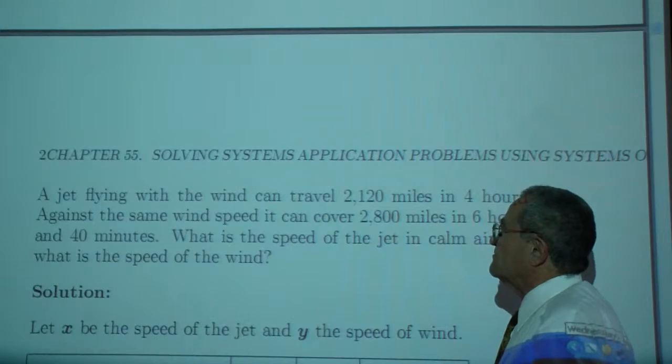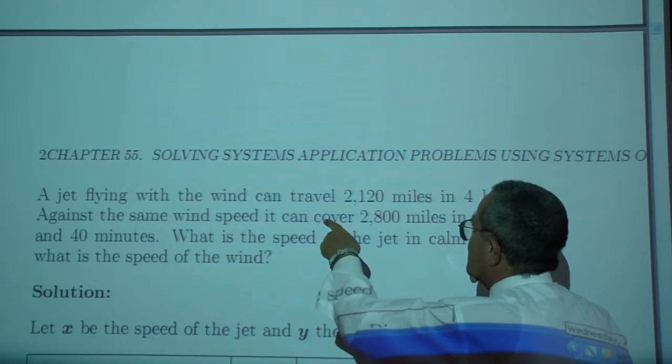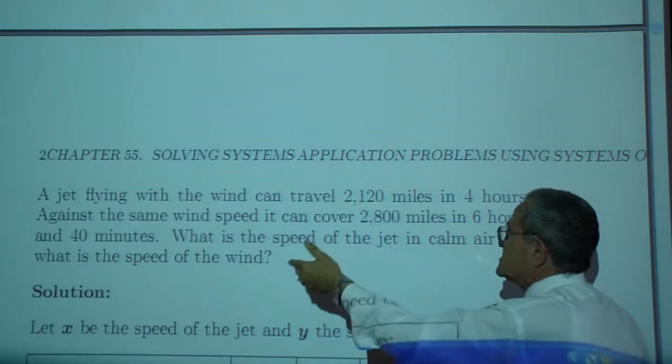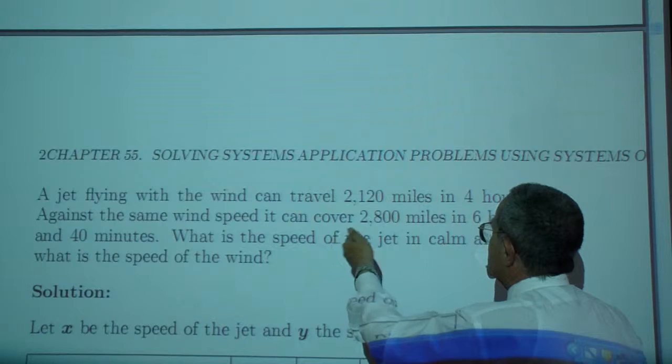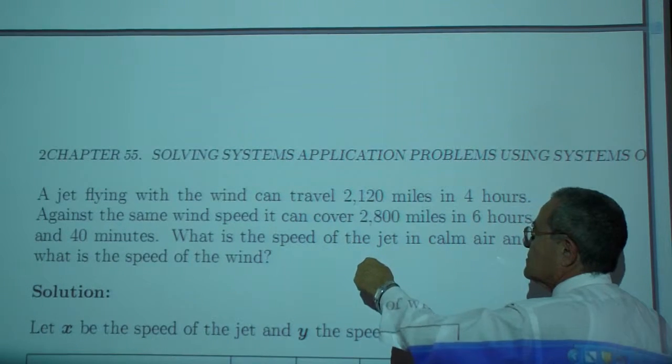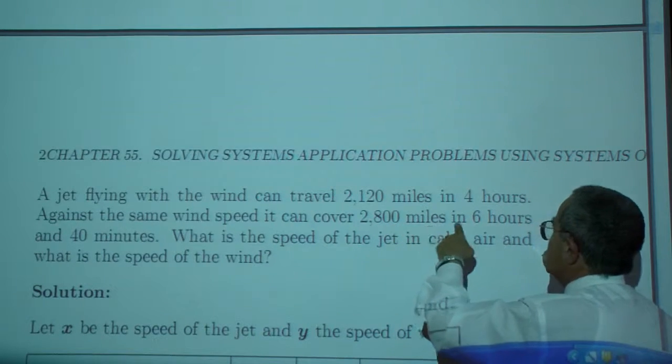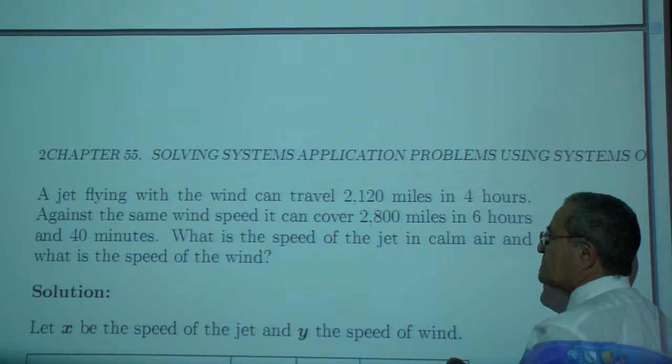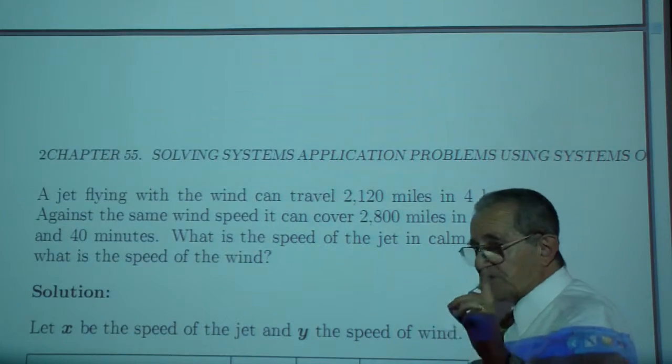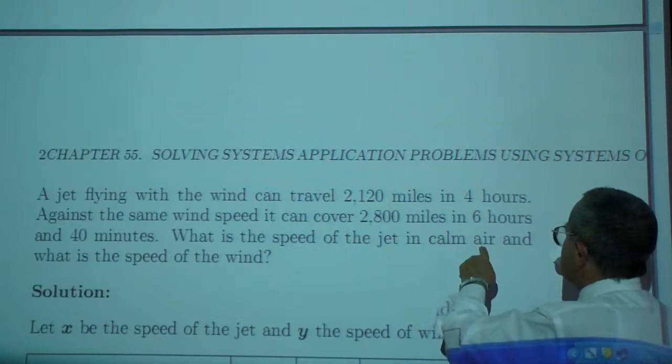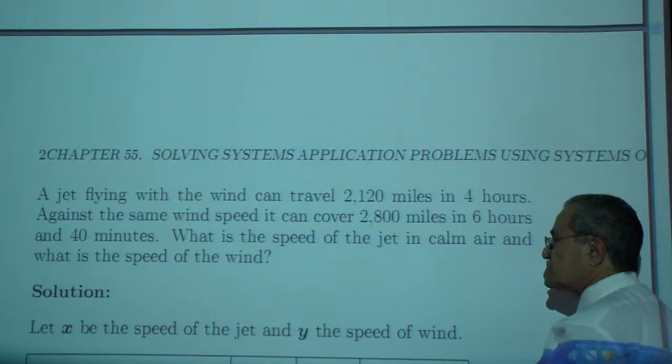Example one. A jet flying with the wind can travel 2,120 miles in four hours. Against the same wind speed, it can cover 2,800 miles in six hours and 40 minutes. Be careful of the units. What is the speed of the jet in calm air and what is the speed of the wind?